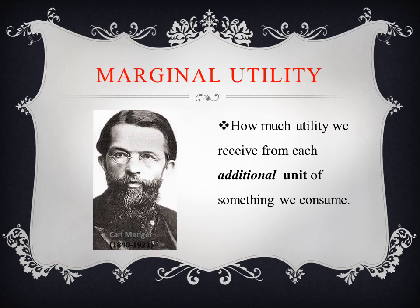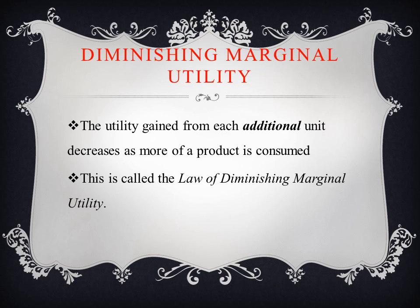Marginal utility is how much utility we receive from each additional unit of something we consume. The idea of marginal utility is often credited to Carl Menger, whom you can see on the left. The law of diminishing marginal utility states that the utility gained from each additional unit decreases as more of a product is consumed.